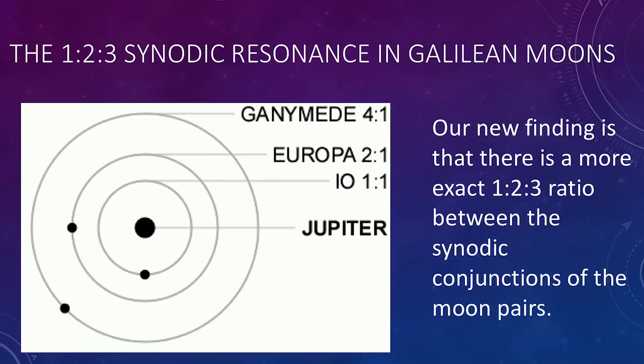What myself and my colleague Stuart Graham discovered is they're wrong about that. It's not a four to two to one relationship, it's actually a three to two to one relationship not between the orbital periods but between the synodic conjunctions between the moon pairs.